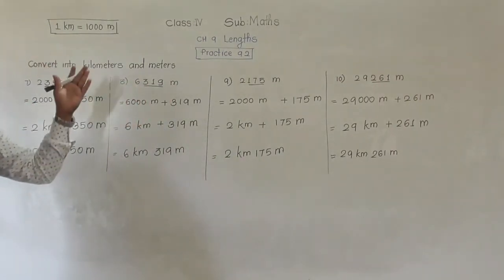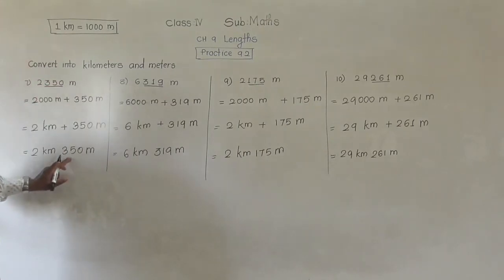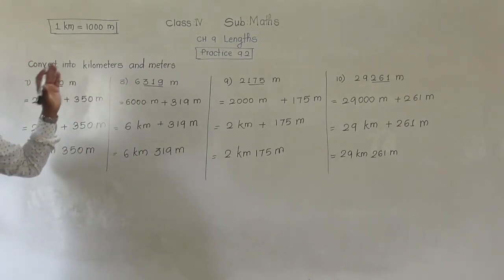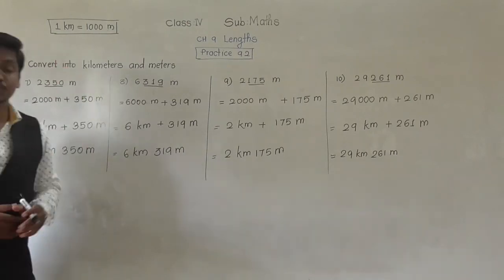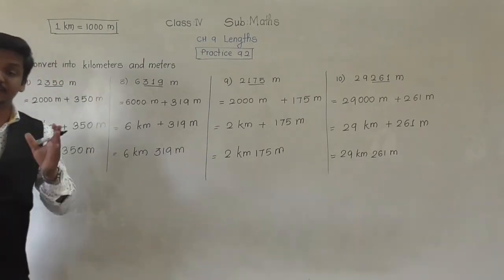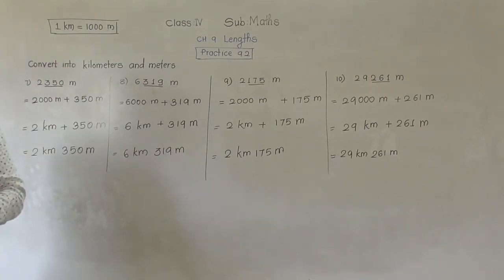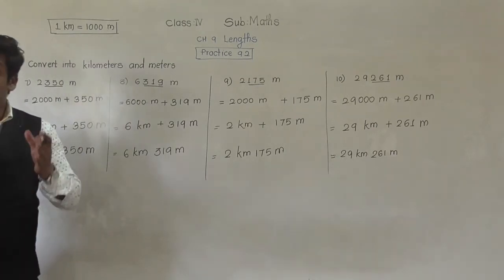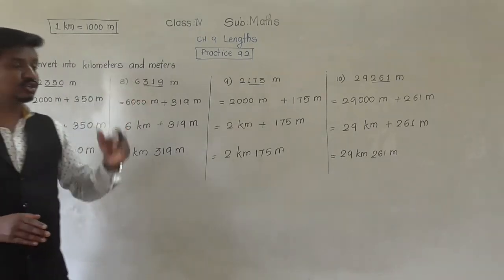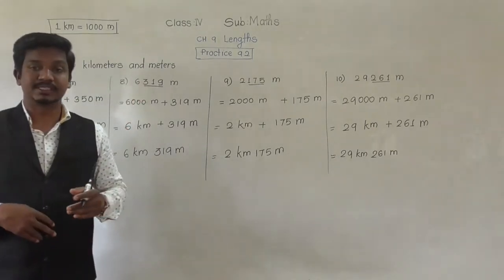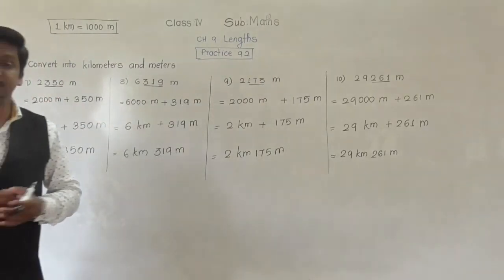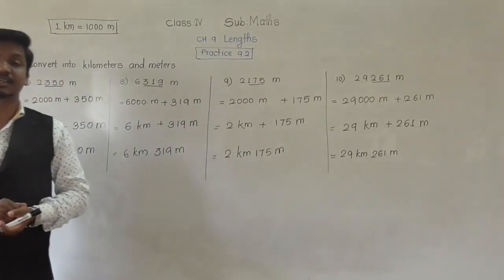So in this way we can convert meters into kilometers and meters. In the first question, when kilometer and meter was given, we converted that into meters. Both questions are opposite to each other. Understand the process, understand the concept, then understand the steps and solve the remaining examples. If you have any doubt, you are free to ask. Thank you and have a nice day.